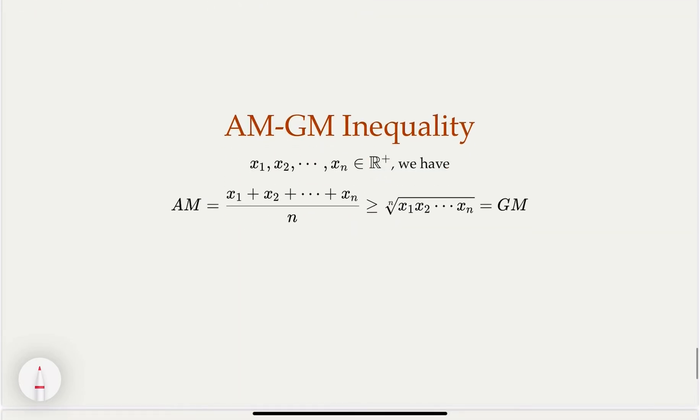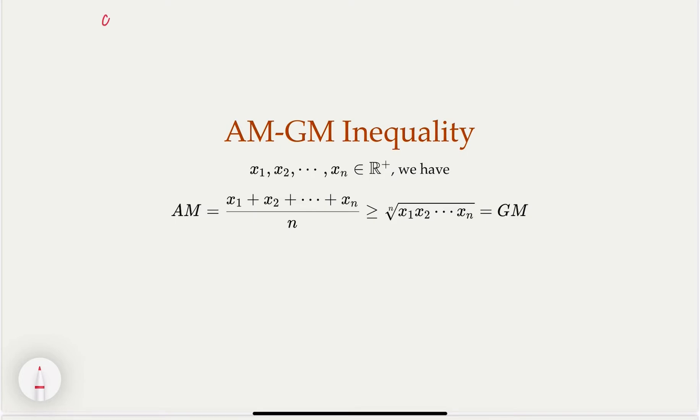We're going to try to prove the AM-GM inequality using the rearrangement inequality. In this case, we need to try to come up with a_n and b_n. So what is a_n? What is b_n? It turns out that what we can do—this quantity, the geometric mean, for easy notation, is called T. So I'm going to construct the a_n sequence like this: I'm going to have x_1 over T, x_1 x_2 over T squared,